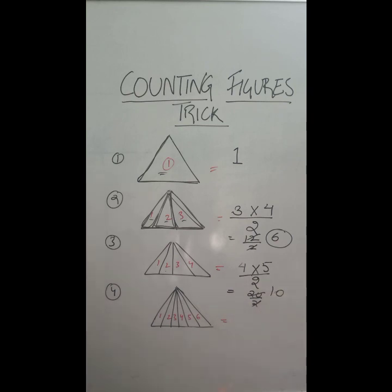Now here I see 1, 2, 3, 4, 5, 6. Similarly we'll write 6 here, 6, one number higher which is 7, by 2. 7 into 6 is 42 by 2 gives you 21. Now if you start counting these 21 triangles, definitely it will cost you your time. So using this trick you can easily find the maximum number of triangles or the figures in the complex images as well.